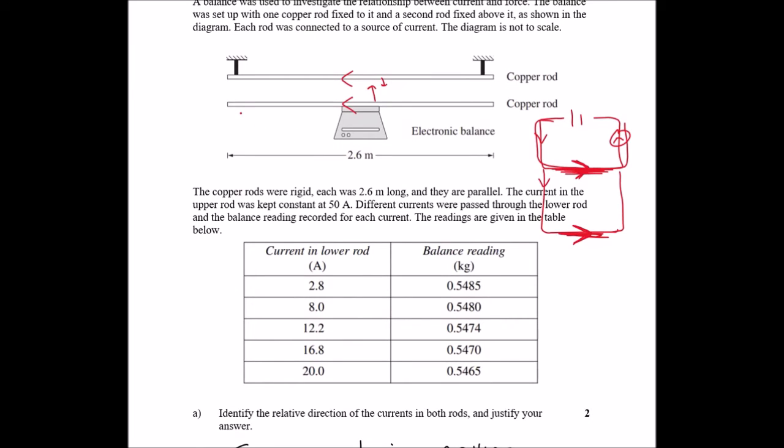So the formula we're going to use is F over length equals k times I1 times I2 over r. So the question is, what is the force? Now the force we're going to look at is when there is zero forces of attraction. So no magnetic force of attraction between the two rods. We're going to simply look at what gravity is doing at this point here.